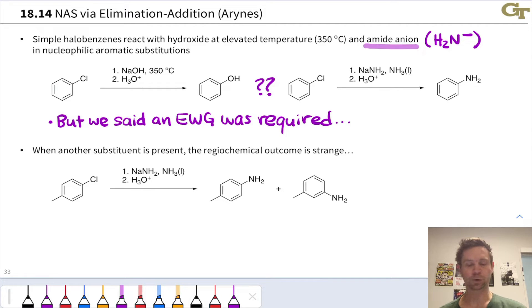In this reaction, again, we're using the amide anion NH2- in liquid ammonia solution as the nucleophile, and after acid treatment, we get not one, but two constitutionally isomeric or regioisomeric anilines.